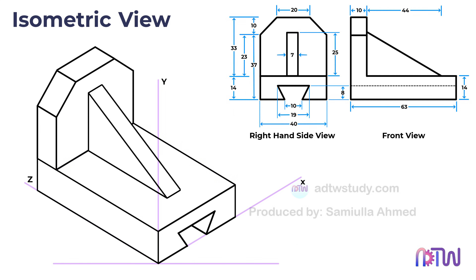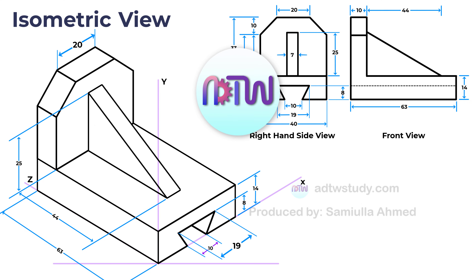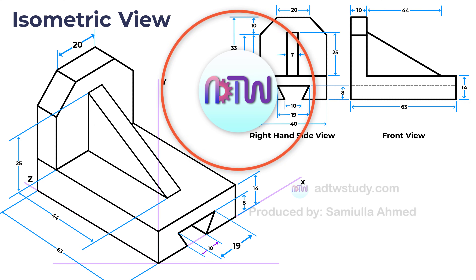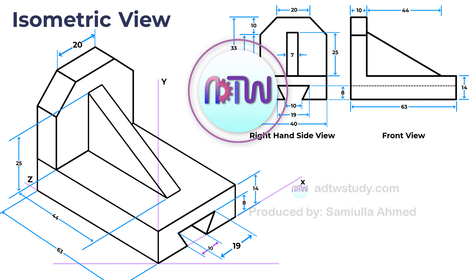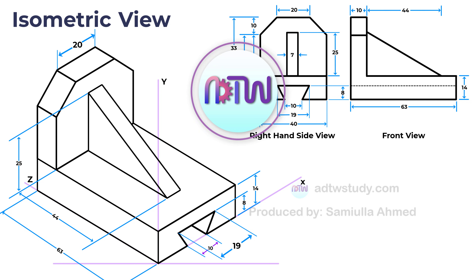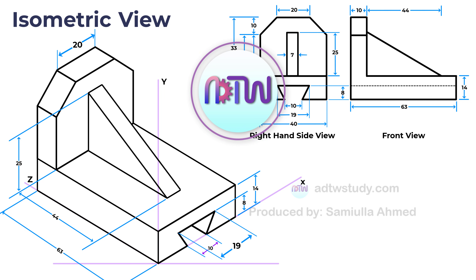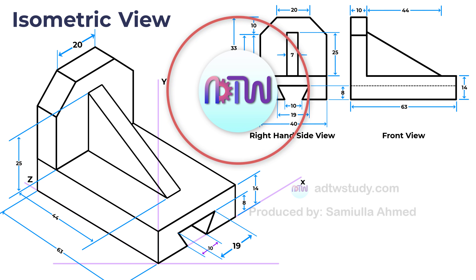After this, do the dimensioning of the figure. This is the final isometric view of the object. I hope this tutorial helped you understand how to construct the isometric view of an object from its orthographic projections. If you found this video useful, please give it a thumbs up by clicking the like button, and if you're new to my channel ADTW Study, make sure to hit the subscribe button to stay updated with all my latest videos.